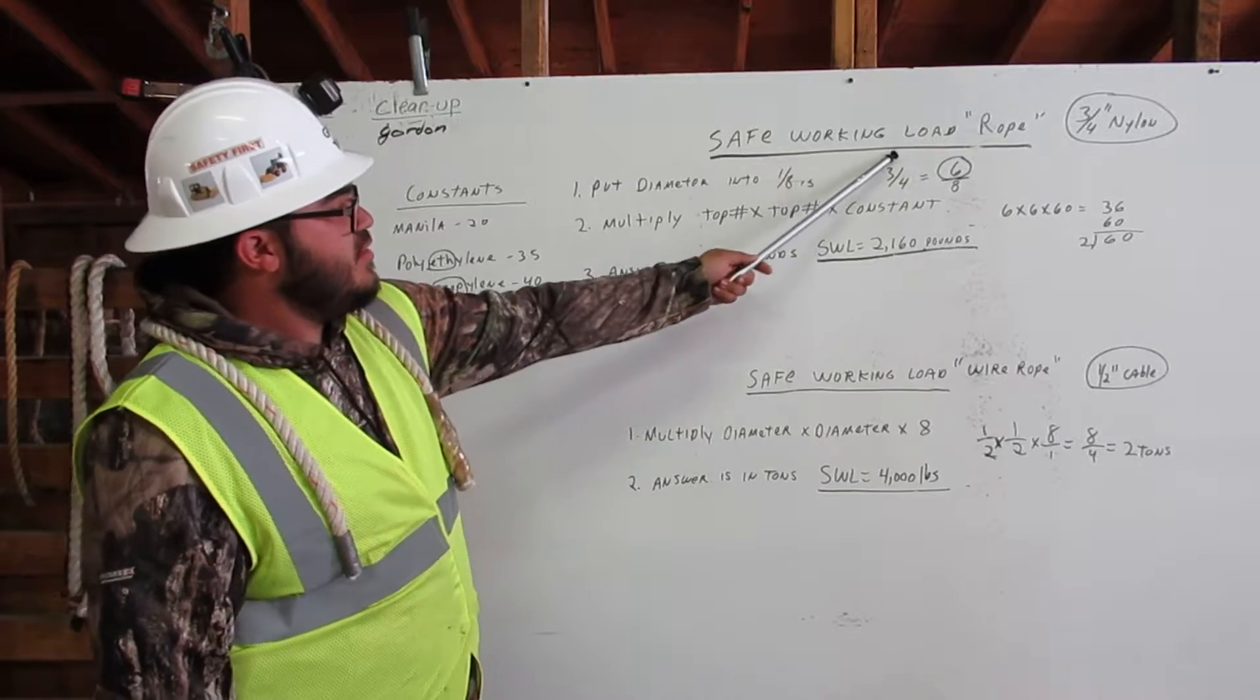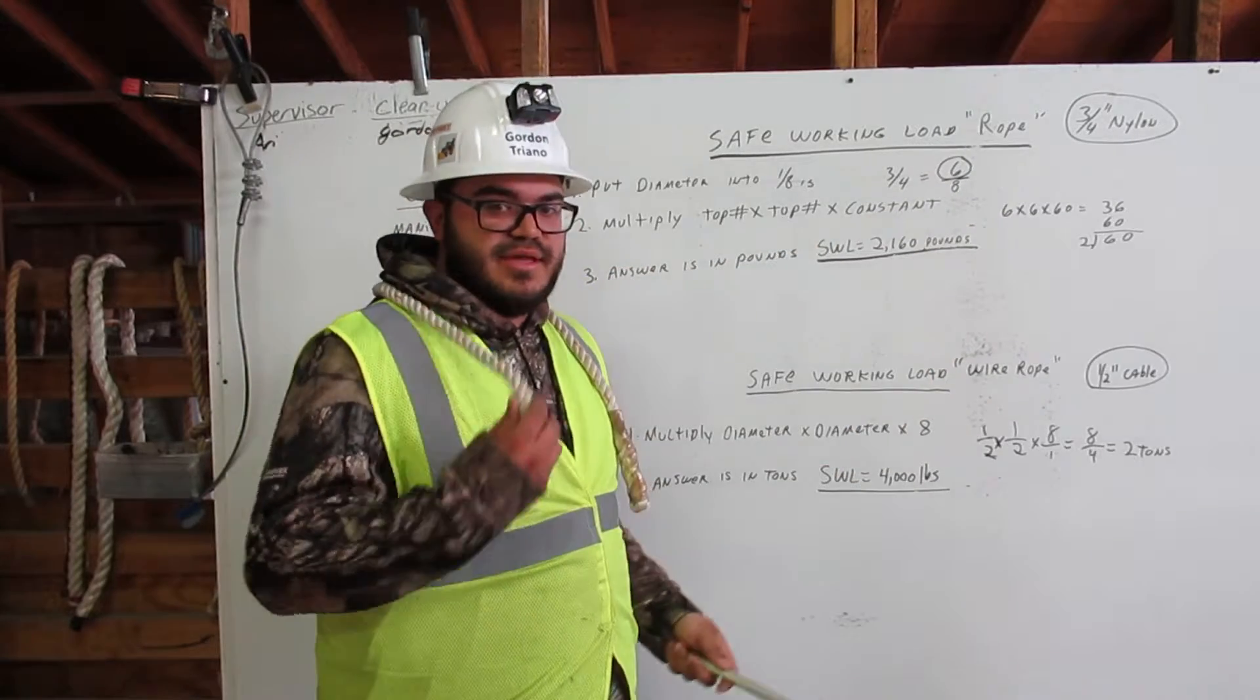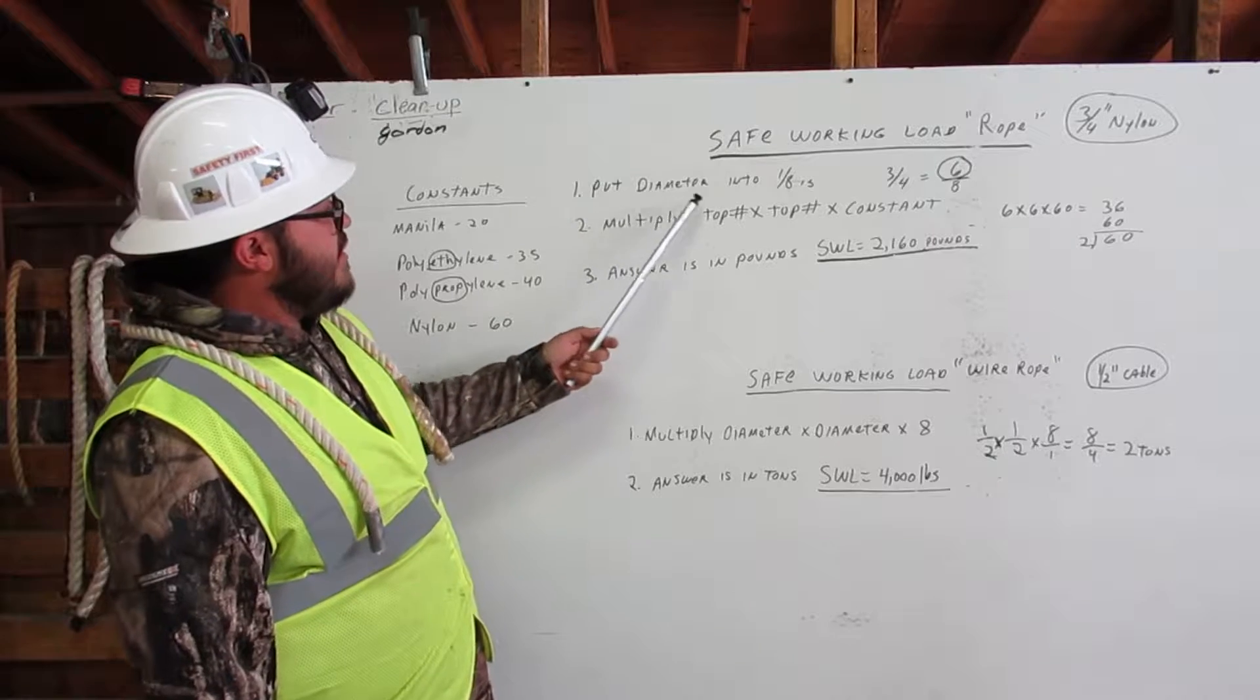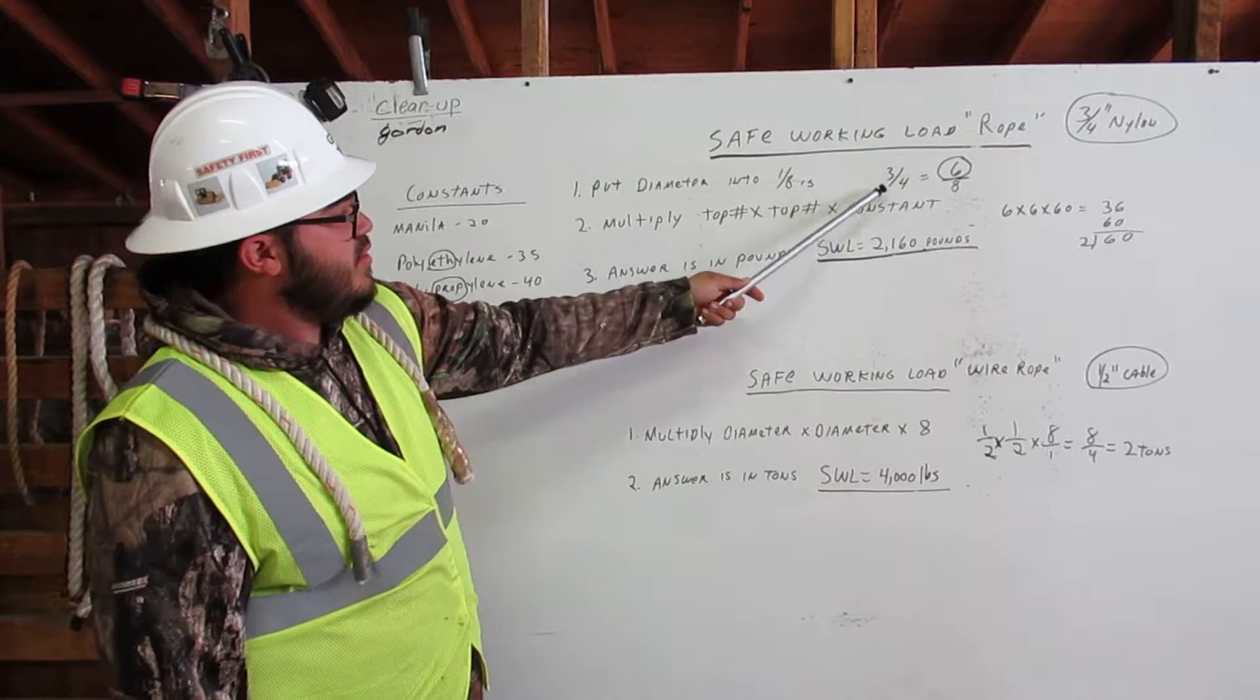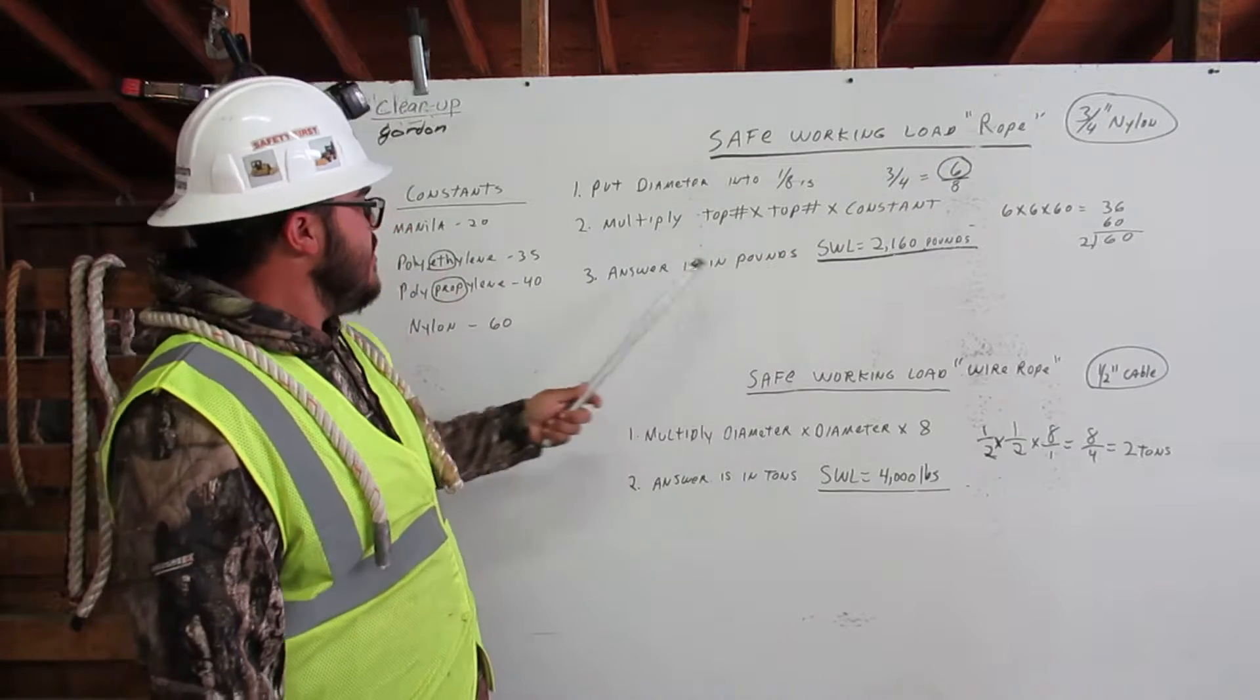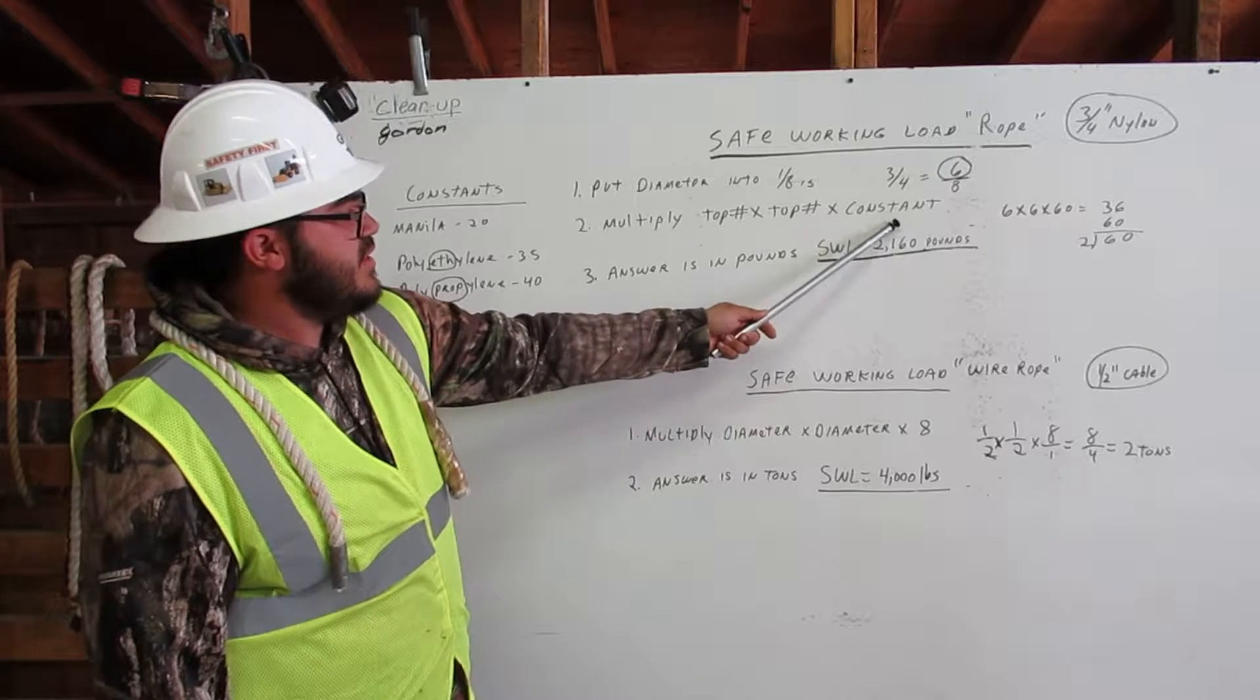Safe working load, rope. Here we have three quarter nylon, like this. First we will put the diameter into eighths. Three quarter equals six eighths. We circle the six.